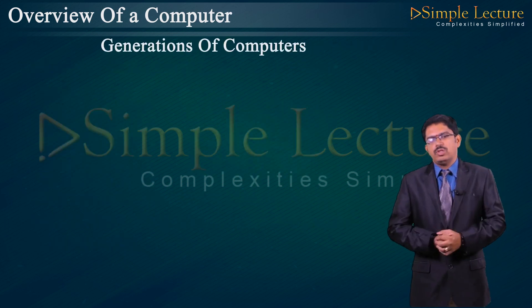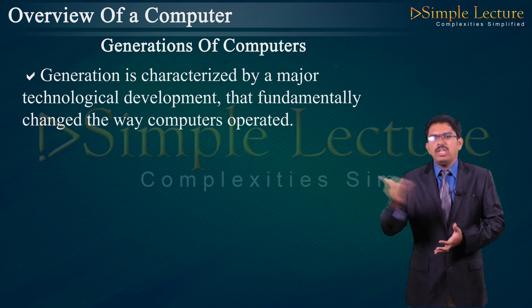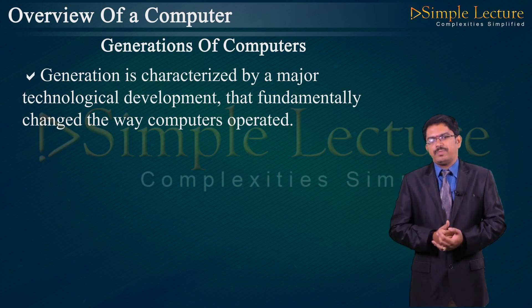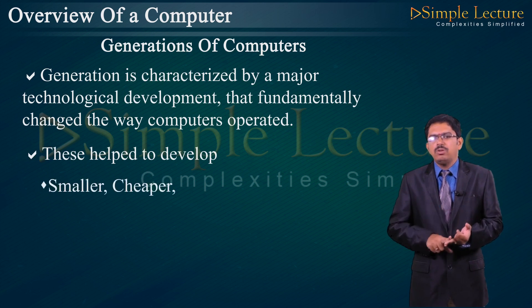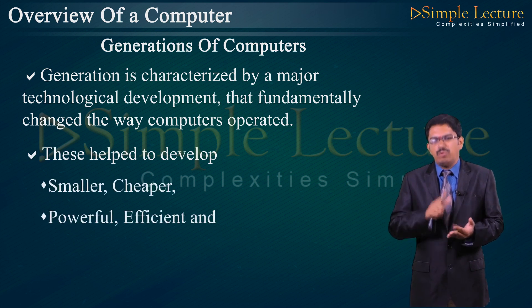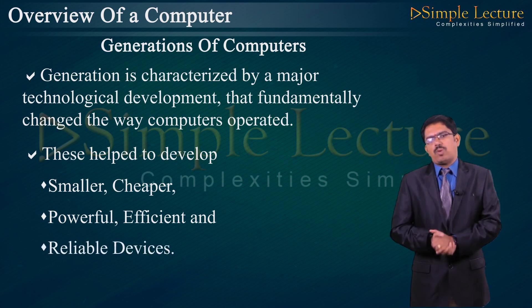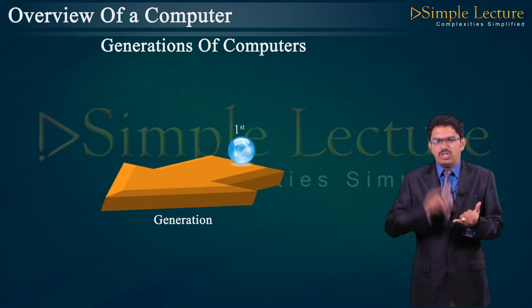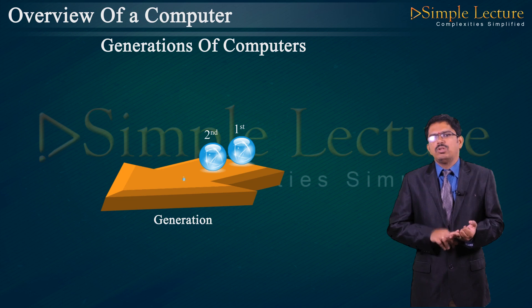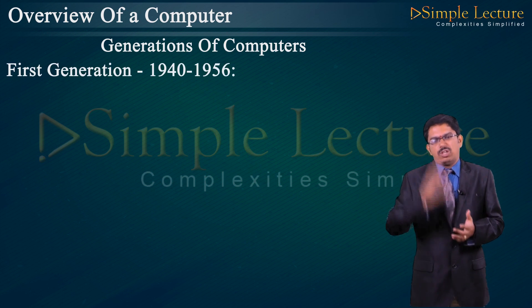Generation of computers: each generation is characterized by a major technology development that fundamentally changed the way computers operated. This helped develop smaller, cheaper, more powerful, efficient, and reliable devices. There are five generations of computers: first, second, third, fourth, and fifth.